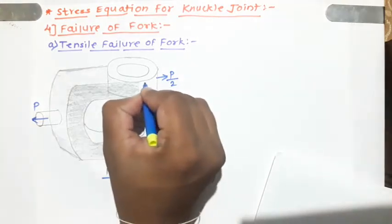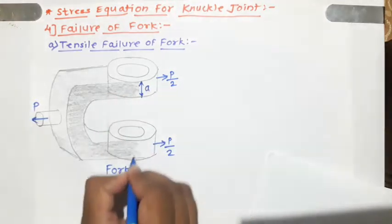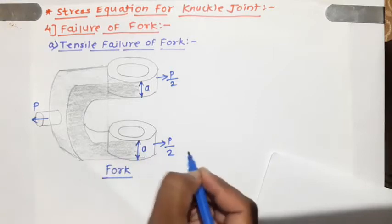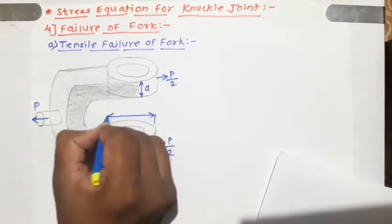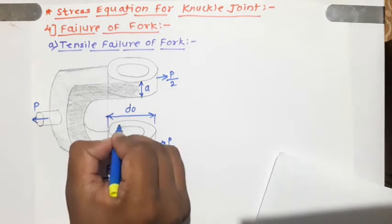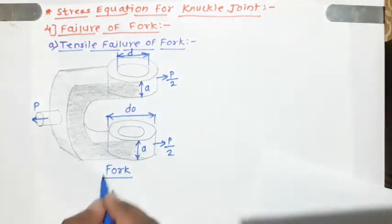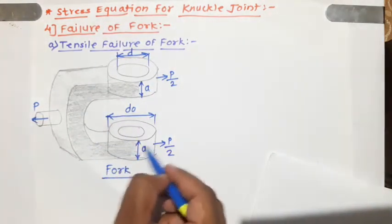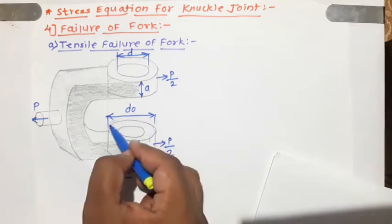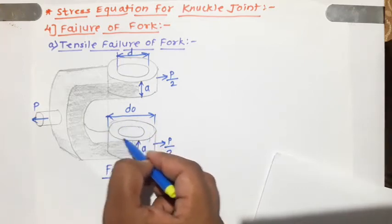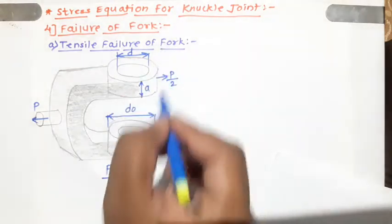Now let us look at the dimensions. The thickness of the fork end is denoted as small 'a' — similarly for both the top and bottom fork ends. The outer diameter of both fork ends is D_O and the inner diameter is small d. As seen in the introductory lecture, D_O is the same for both the fork and the eye, and the inner diameter d is also the same for both.